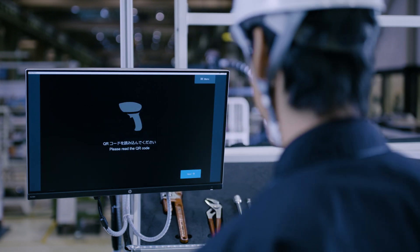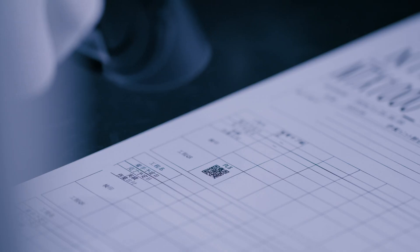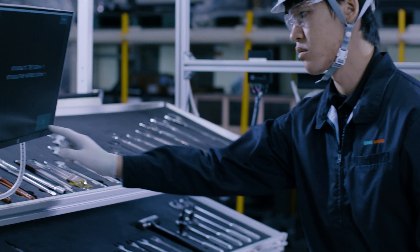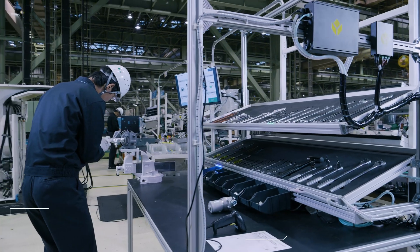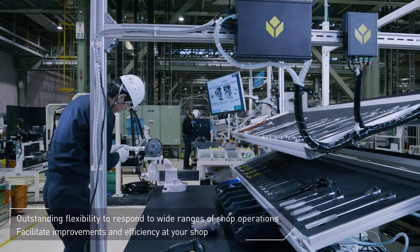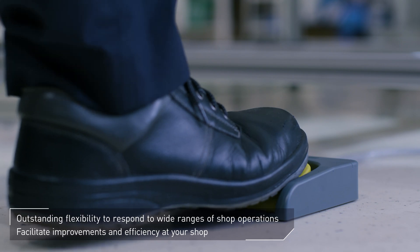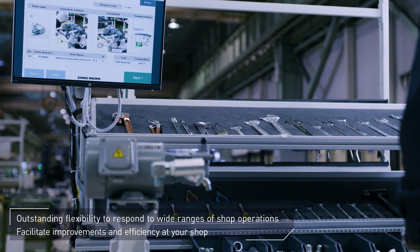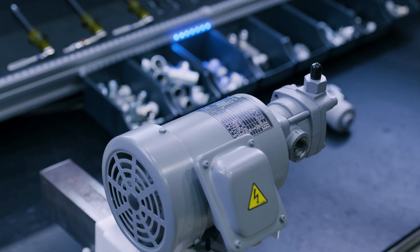TULIP is a flexible system to support a wide range of shop operations. It visualizes issues of production processes by connecting the entire shop and facilitates improvement activities.